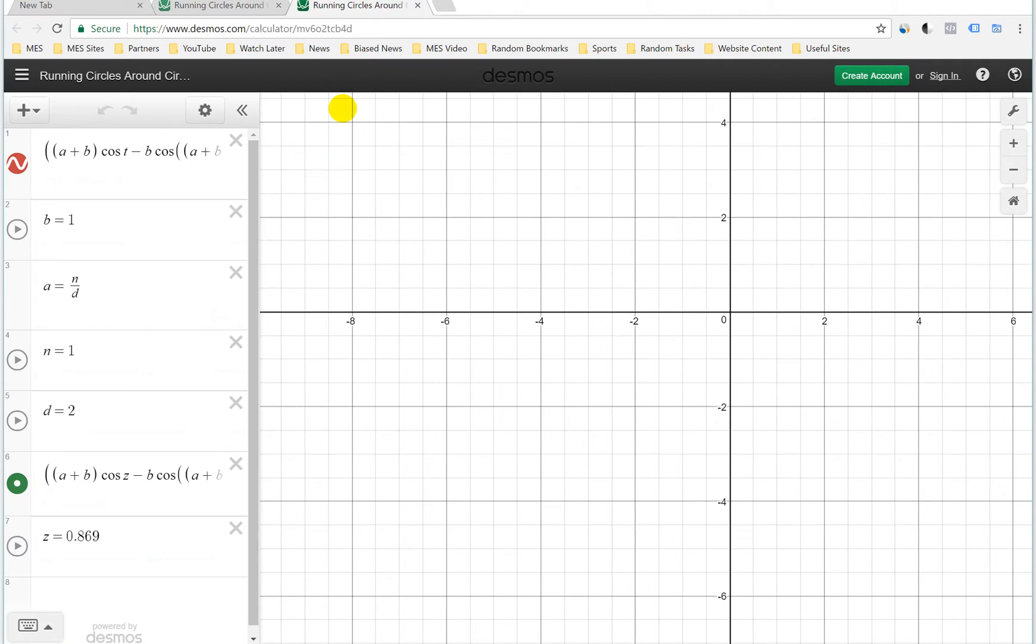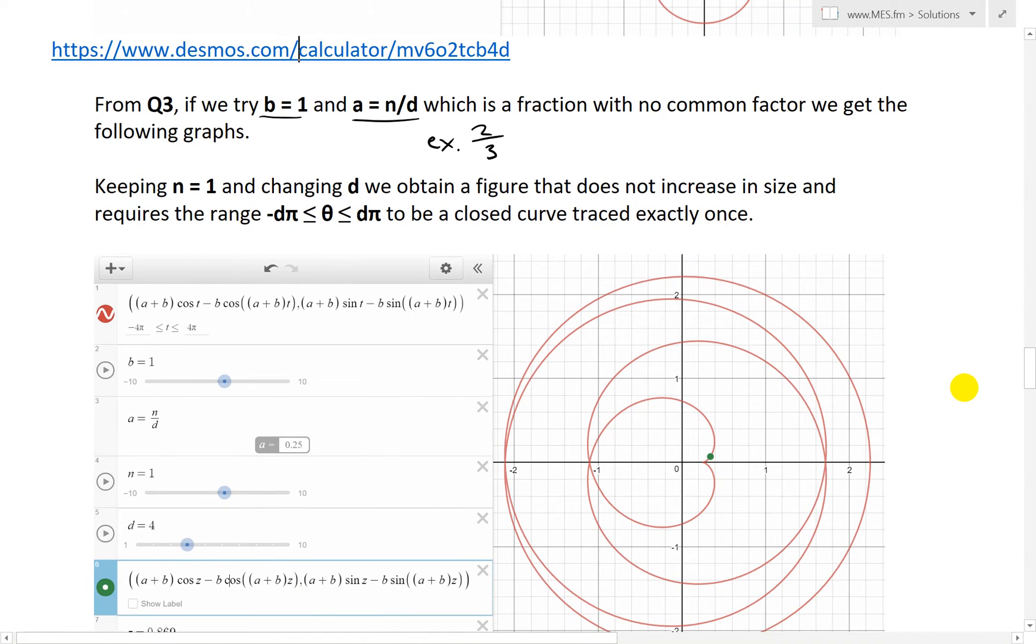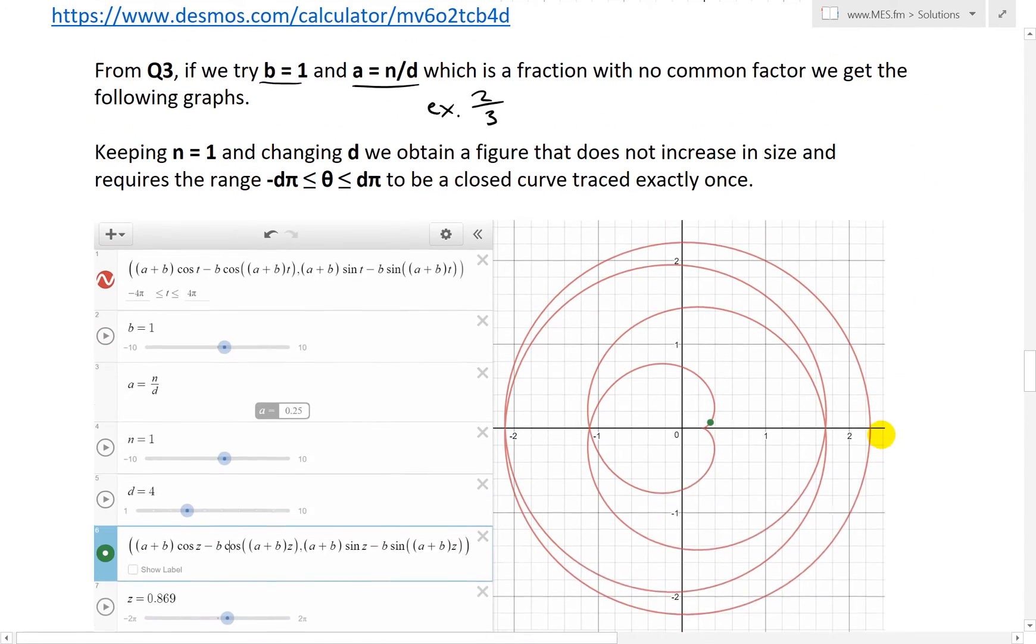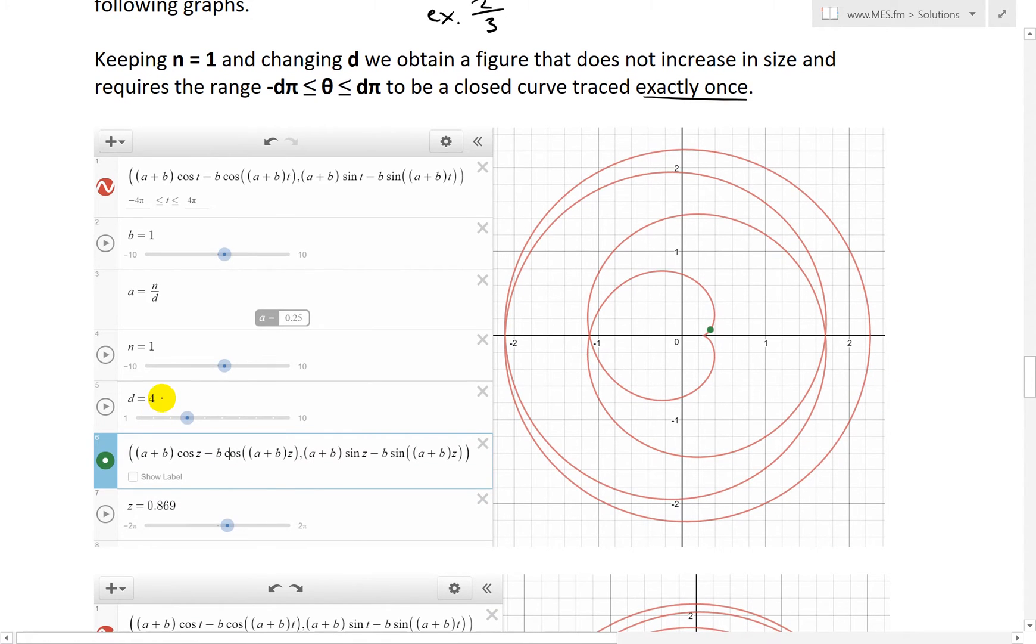You could see that I've done that, a equals to n over d. And this is cool, you could put, this is n plus b in there. And I have a equals to n over d right here. And you could change n and d here. And here what I've done now is if keeping n equals to 1 and changing d, we obtain a figure that does not increase in size and requires the range, you have the range, this is going to be negative d pi, where theta is between negative d pi and d, positive d times pi, to be a closed curve traced exactly once.